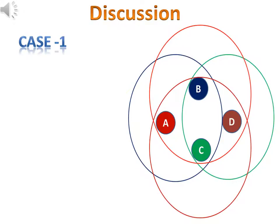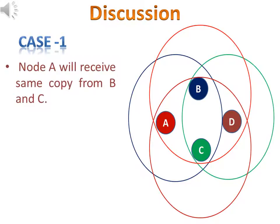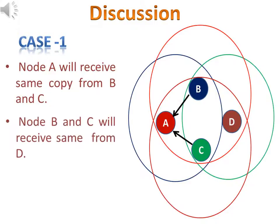Let's start discussion on our given scenario. In the given figure, what problem will occur when there is blind flooding in the network? When node A initiates a broadcast of a message and the message is received by nodes B and C, since node A is within the transmission range of nodes B and C, it will receive two redundant copies of the message from nodes B and C. This is also the case with nodes B and C, which receive the message from node D and from each other.